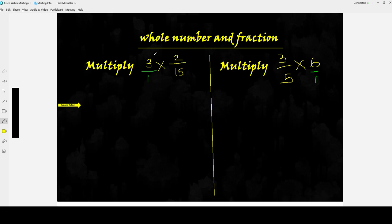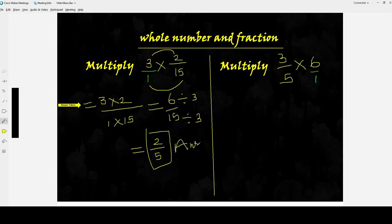3 times 2 over 15. 3 twos are 6, 1 five, fives are 15. Now again, this is simplifiable. Both are divisible by 3, which is equal to 2 by 5. That's it. This is the final answer.